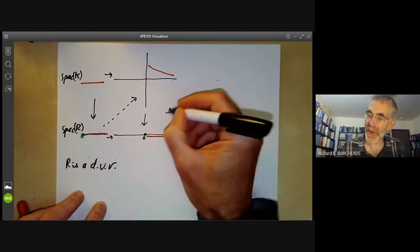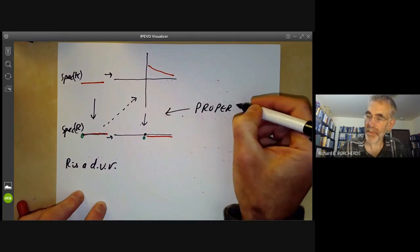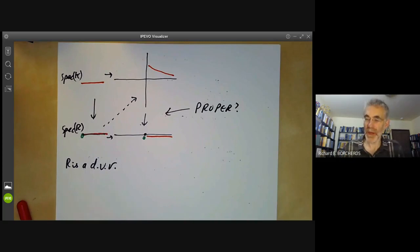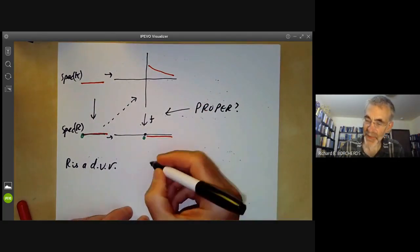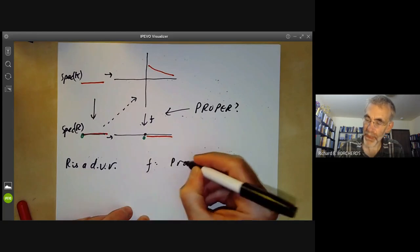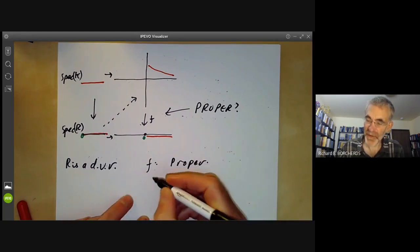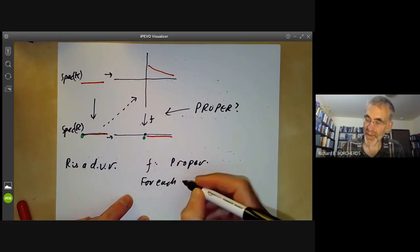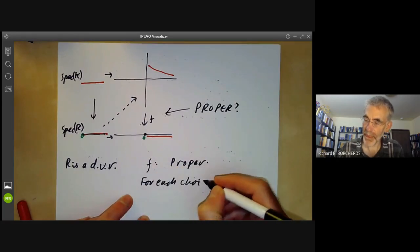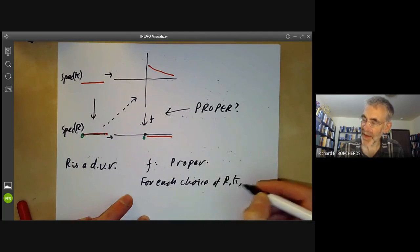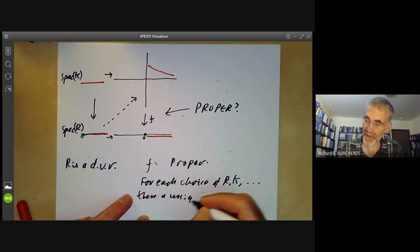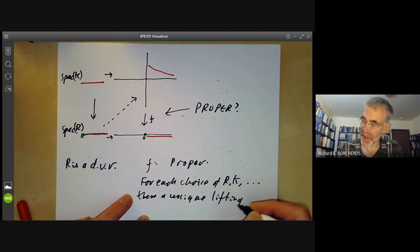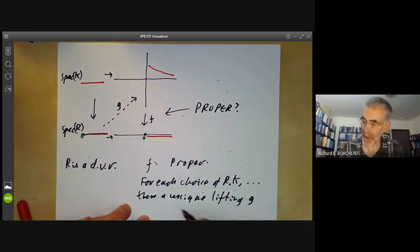This map here should be proper, or possibly might be proper. So this suggests there should be a relation between the map F being proper and the relation that for each choice of R and K and maps between them as above, there is a unique map, there is a unique lifting G.